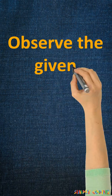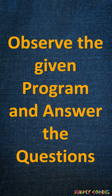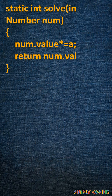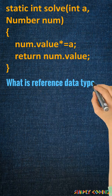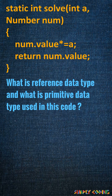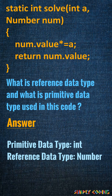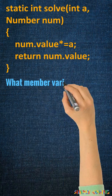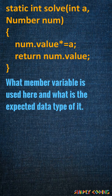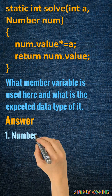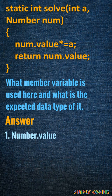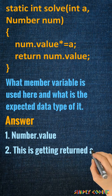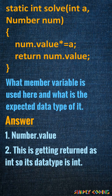Another type of question is where you are given a program and asked to demonstrate your understanding of it. Let's see this small program sample. The first question is: what is the reference data type and what is the primitive data type used in this code? The answer is int and number — int is used for the return type as well. What member variable is used here and what is its expected data type? The member variable used is the value of object num, and since it is returned as int, its data type is int.